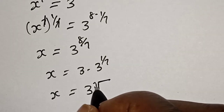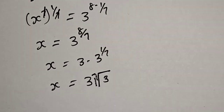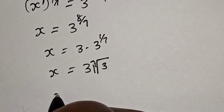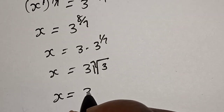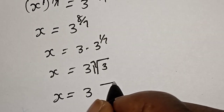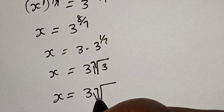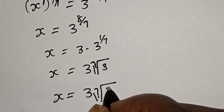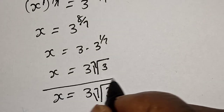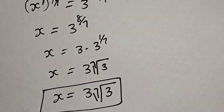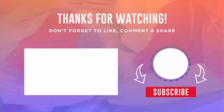So s is equal to the seventh root of 3 to the 8th power. Our final answer is s is equal to the seventh root of 3 to the 8th power, which is the seventh root of 9. If you enjoyed the class, please don't forget to like, share, comment and subscribe. Thank you.